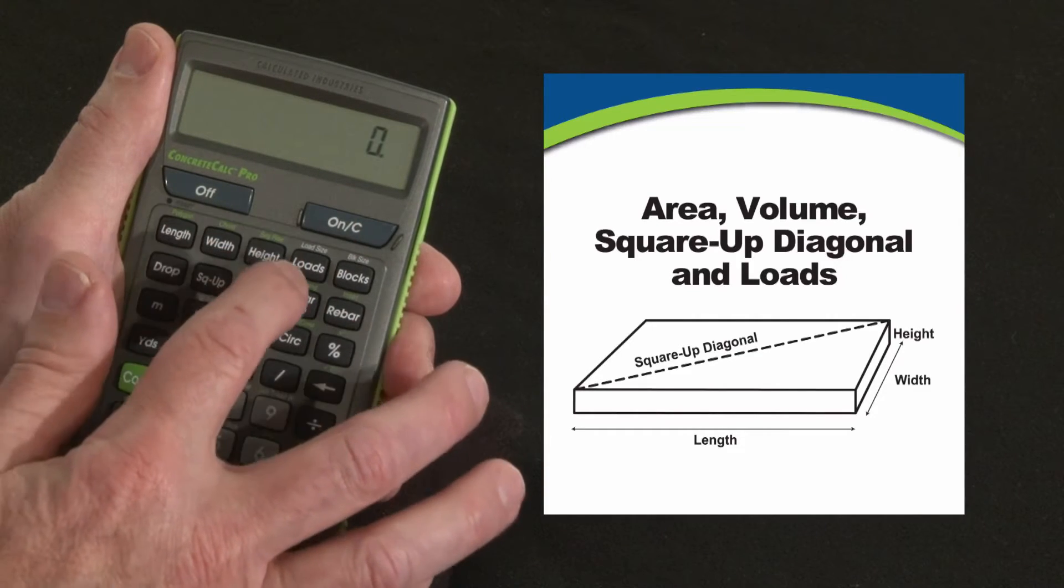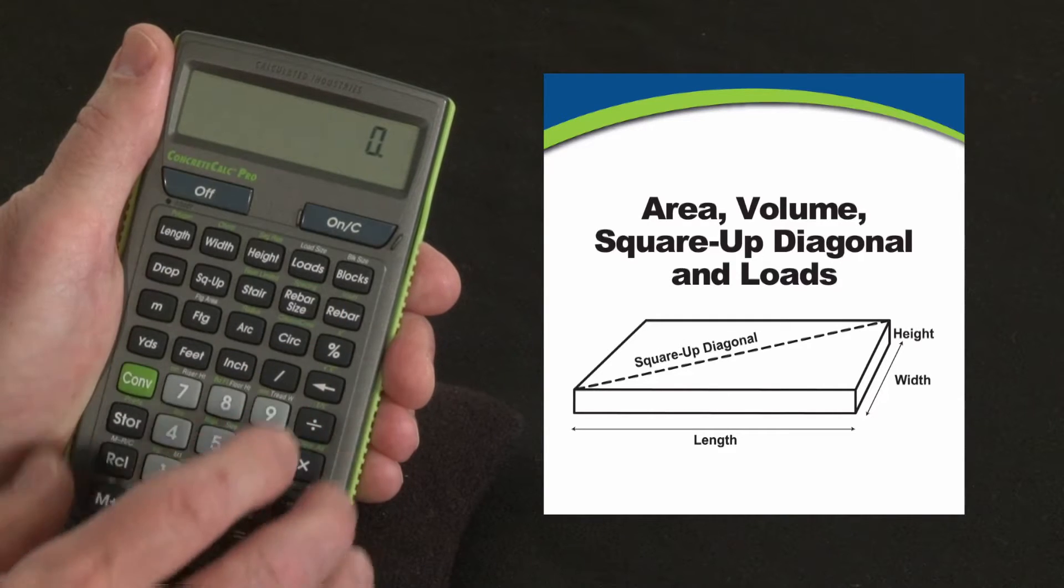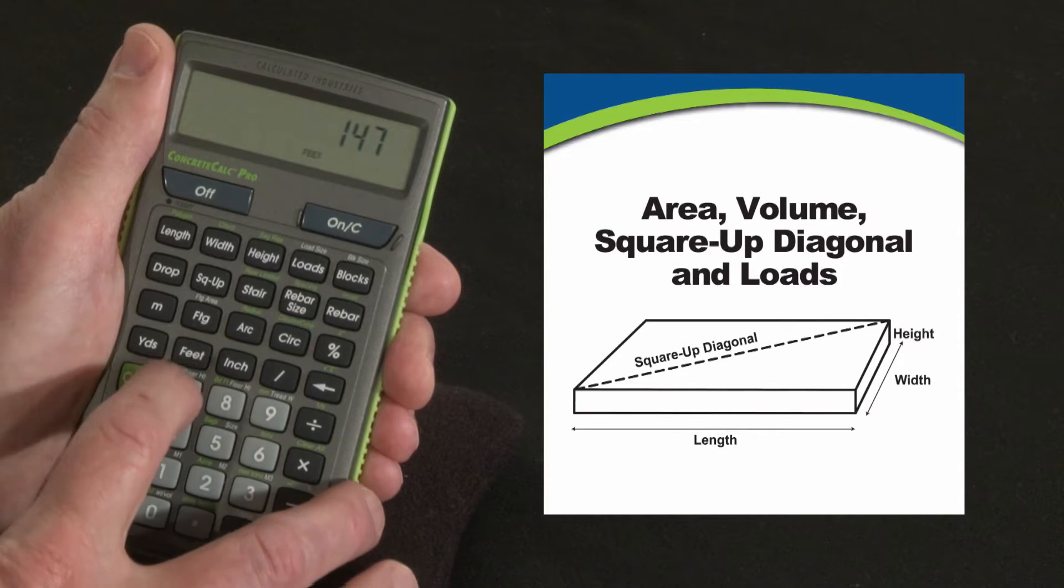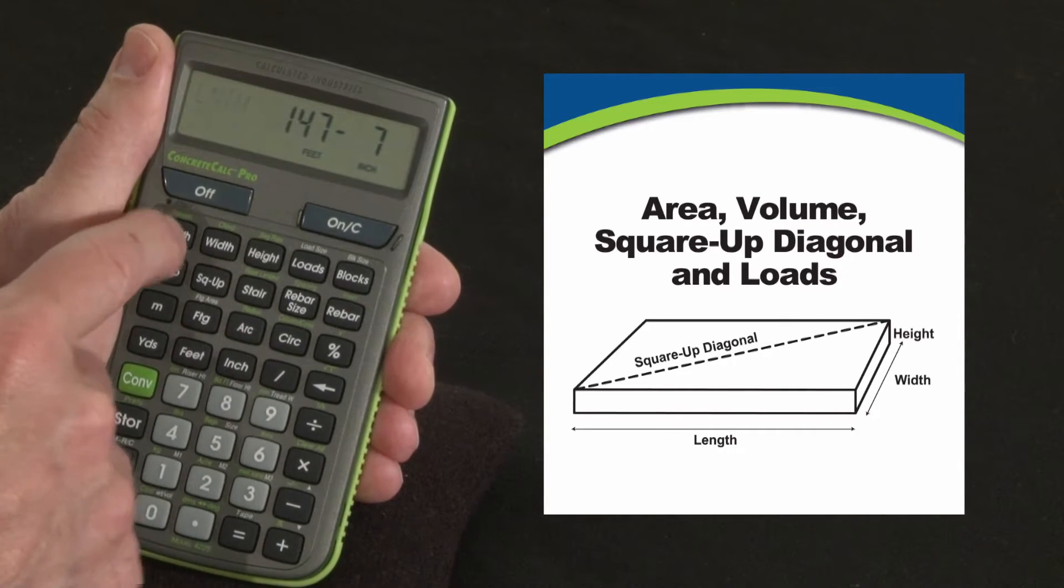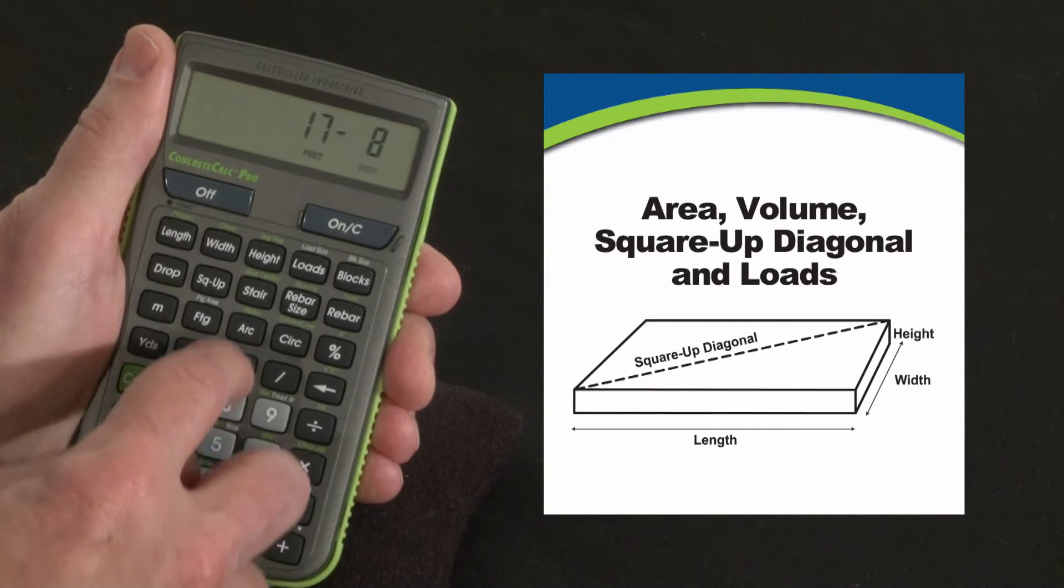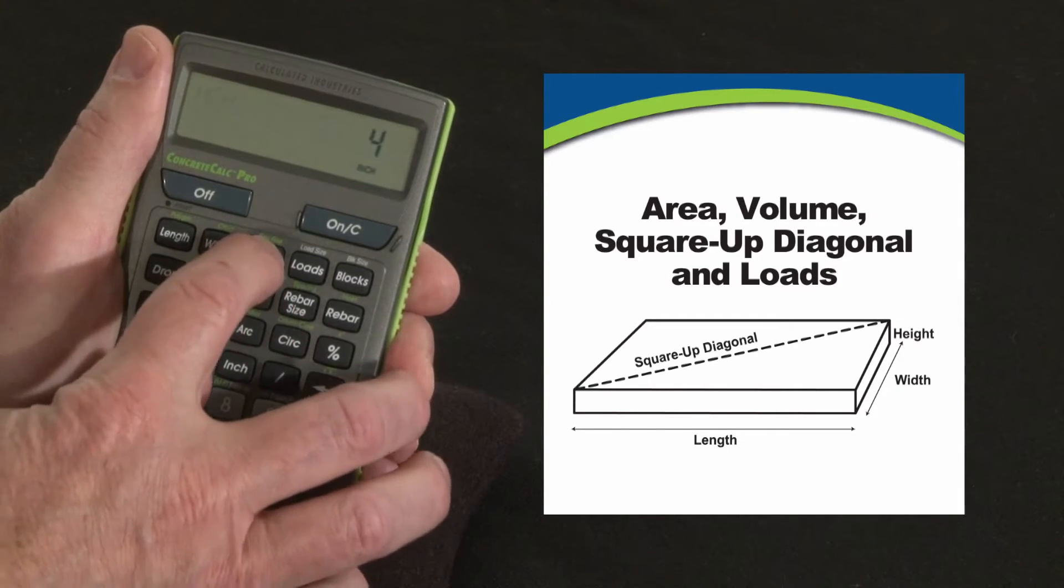You can use the length, width, and height functions to enter the three values once and get a whole series of answers out. So let's make it a bigger job: a 147 feet 7 inch long driveway is our length, maybe it's going to be 17 feet 8 inches wide, and we're going to go 4 inches thick or height.